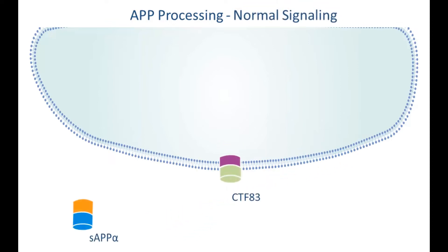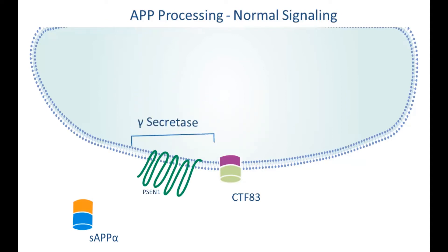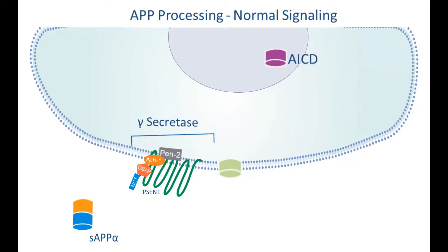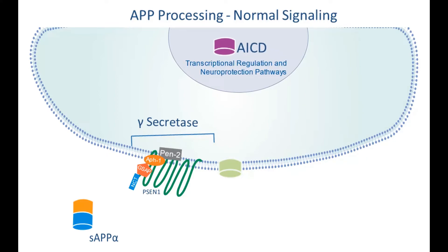In normal signaling, CTF83 is further cleaved by a gamma secretase complex made up of PSEN1, PEN2, APH1, GSAP, and NCT. Cleavage of CTF83 leads to the generation of APP intracellular domain, otherwise known as AICD fragment. AICD fragment then translocates to the nucleus, where it affects the transcriptional regulation of several proteins and drives neuroprotective pathways.